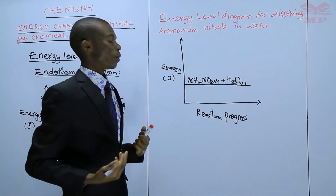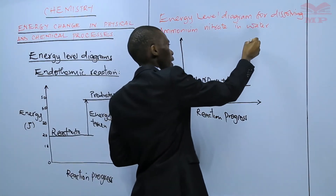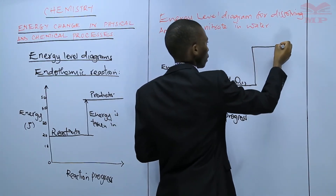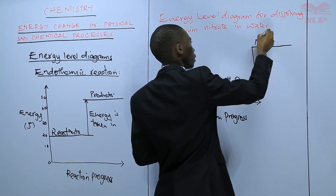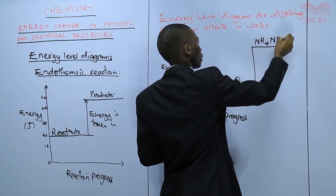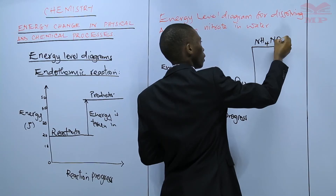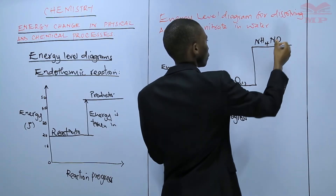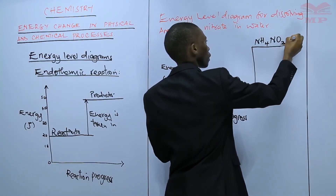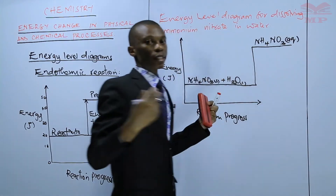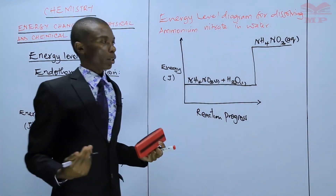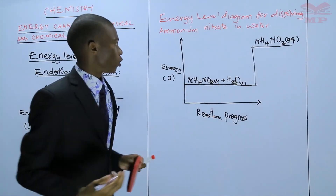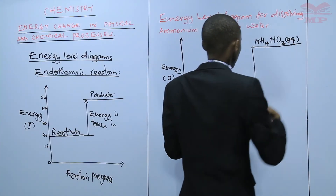What you get after this experiment will be ammonium nitrate solution — AQ means it is aqueous, it is a solution, ammonium nitrate solution. That's what you are getting after dissolving ammonium nitrate in water.